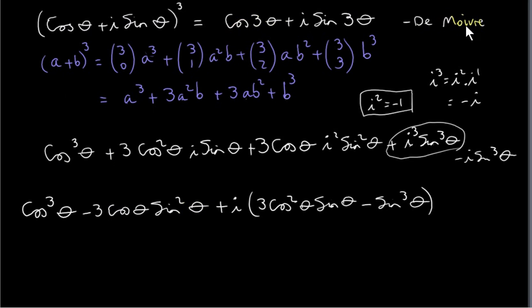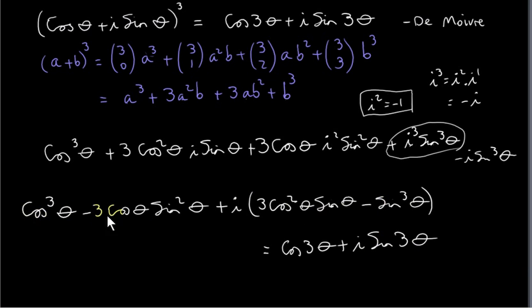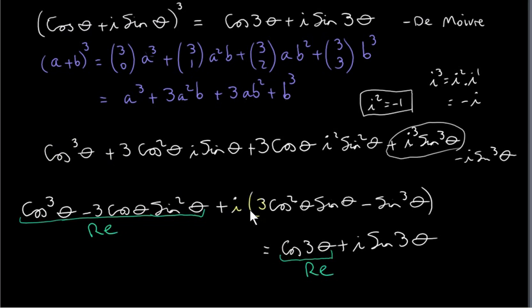By De Moivre's theorem, this must equal cos 3θ + i sin 3θ. We have two complex numbers equal to each other: the real part on the left must equal the real part on the right, and the imaginary part on the left must equal the imaginary part on the right. That's the only way two complex numbers can be equal.